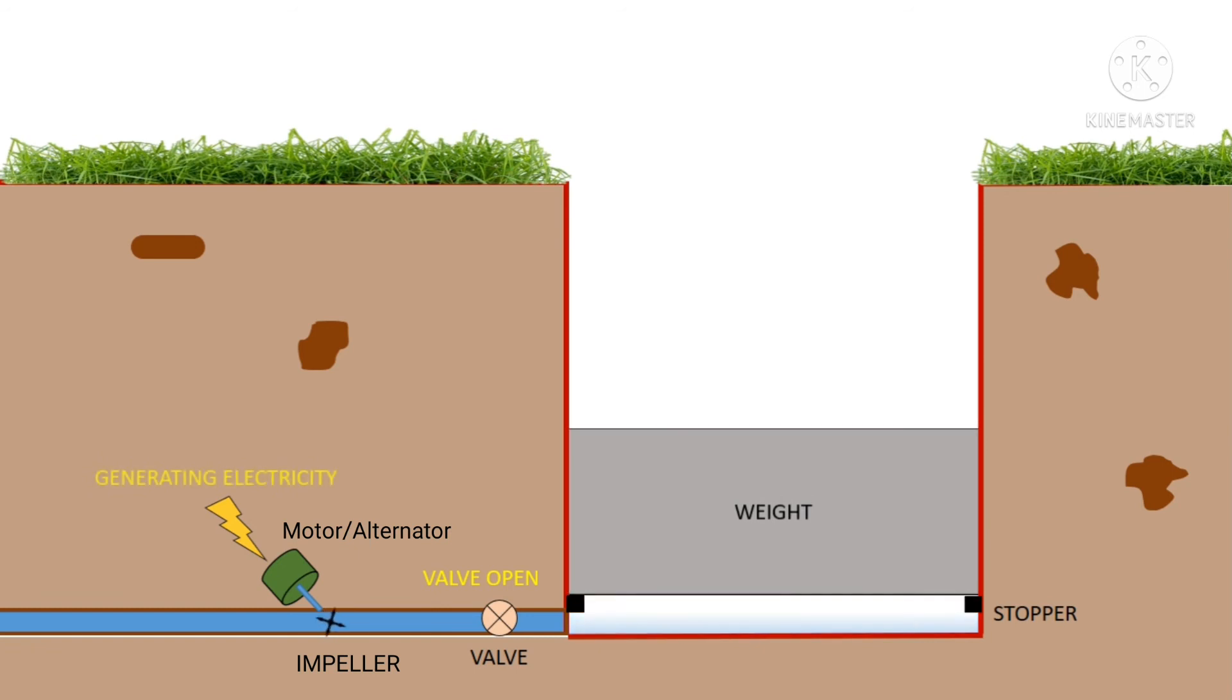When using this stored energy, the valve in the hydraulic line is opened and the weight presses the fluid to flow over the impeller. This rotation of the impeller converts into electricity.